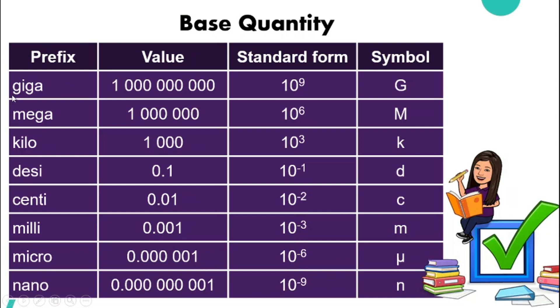So we have Giga, Mega, Kilo, Deci, Centi, Milli, Micro, and also Nano.